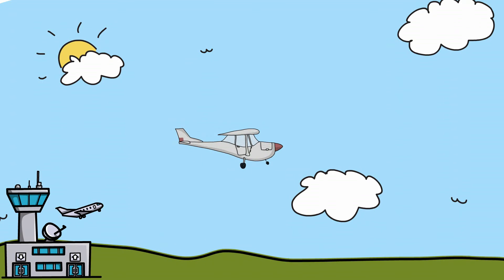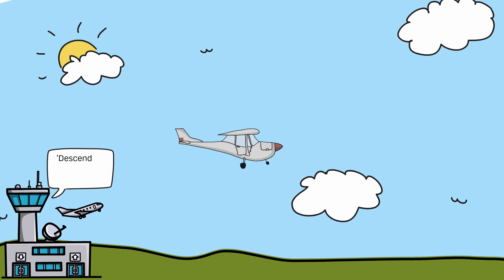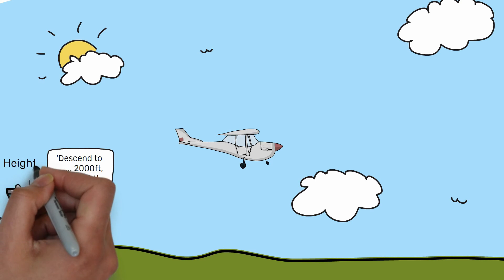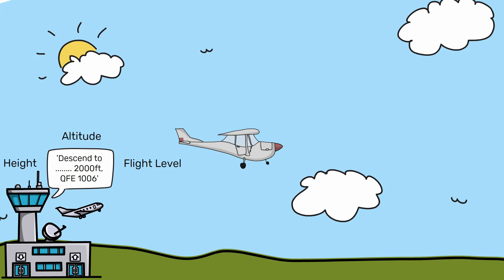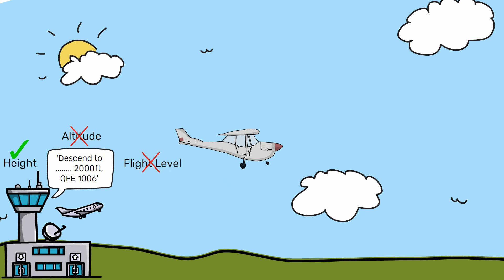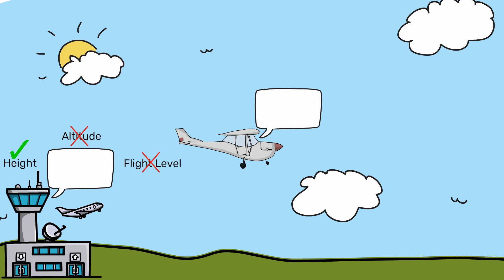The controller is now preparing you for landing and says the following phrase. What word fills the blank? The correct answer is height. The controller would say: descend to height 2000ft, QFE 1006, because you are on the QFE. Now you understand the differences between height, altitude and flight level. But what's more important is the understanding of QFE, QNH and SAS, because setting the wrong pressure can be potentially life threatening.